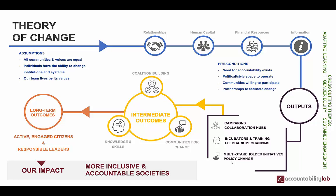They've set the base that for you to get to your long-term impact, you need to have these in place: building relationships and financial resources. Once these activities are done, the output is realized. When these outputs are realized, you get intermediate outcomes — knowledge and skills, coalition building, and communities for change — which translates into achieving the overall impact that you want to see.